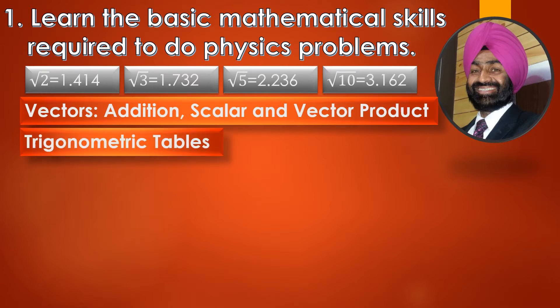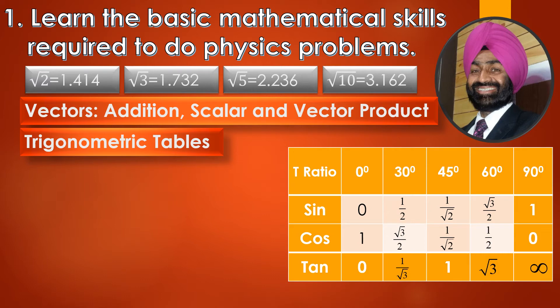Trigonometric tables learned in class 10th — sine, cos, and tan only — are required, and the standard values at 0, 30, 45, 60, and 90 degrees. You must know all these trigonometric ratios on your fingertips so that you can perform faster in numericals.